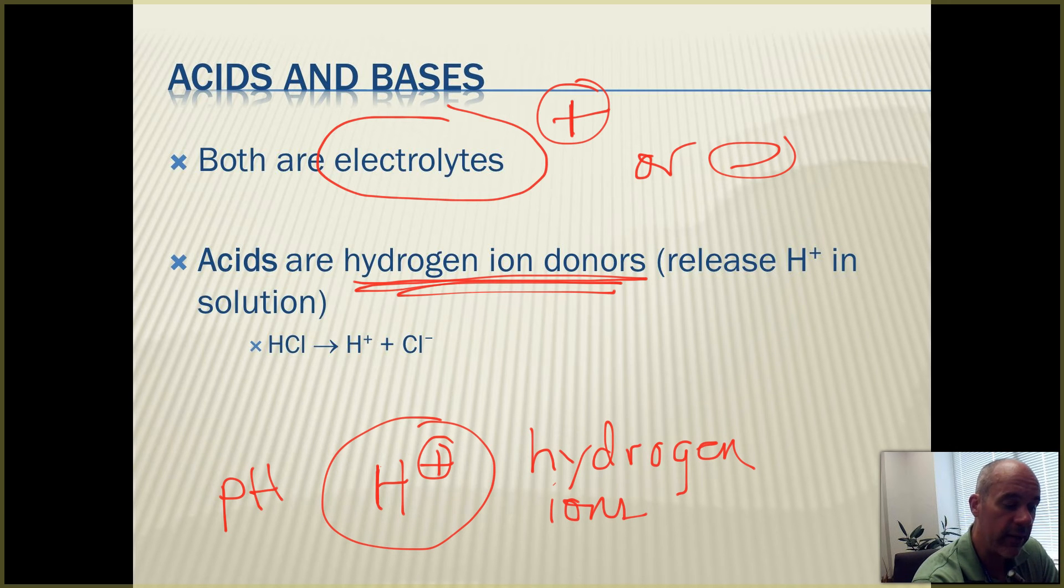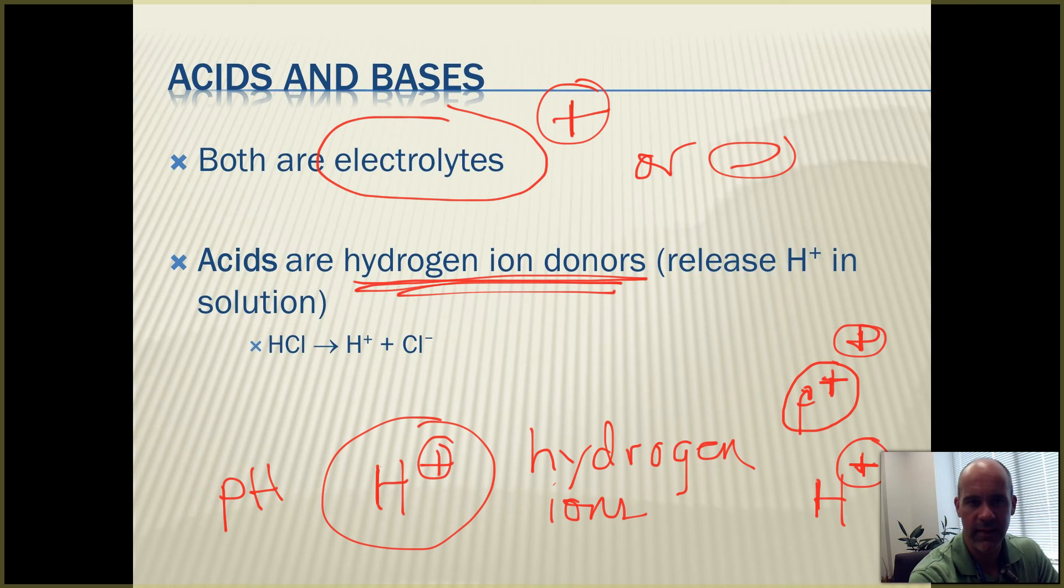The reason for that is hydrogen is the simplest element. You've got a single proton in the nucleus and a single electron orbiting that nucleus. That's all a neutral hydrogen atom is. So if we get rid of that one electron, that electron is given up to some other atom, what do we have left? All you really have left is that proton in the nucleus, which has a positive charge. So that can also be represented as a hydrogen ion.